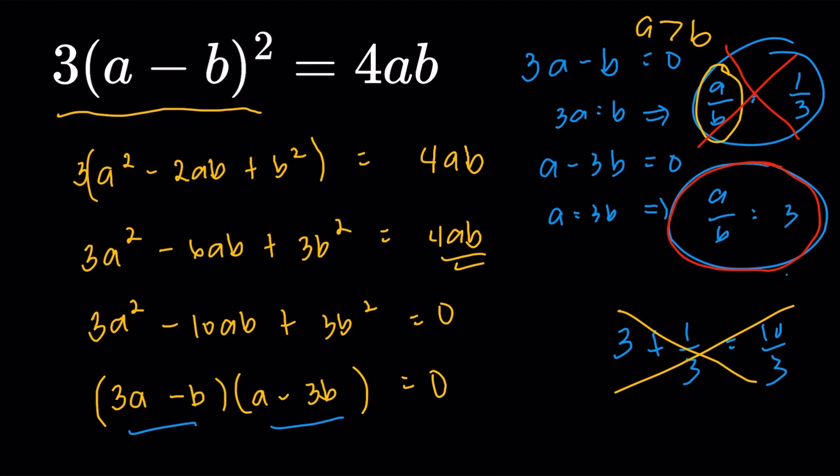And we are going to consider just a over b being equal to 3. So we have two possible cases. One case doesn't work. So there's only one possible value of a over b. So obviously the sum of all possible values is just going to be 3 in this case. And this will be our final answer. Hopefully you guys learned something new from this video and I'll see you in the next one. Bye bye.